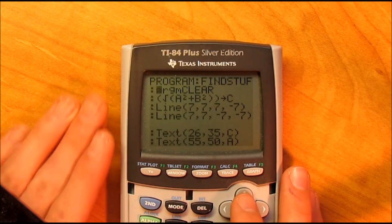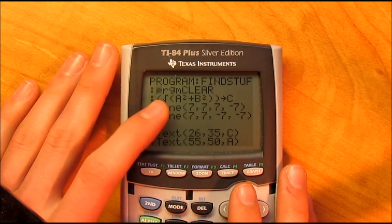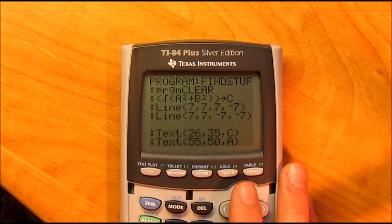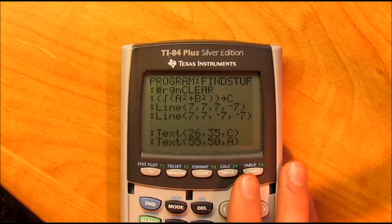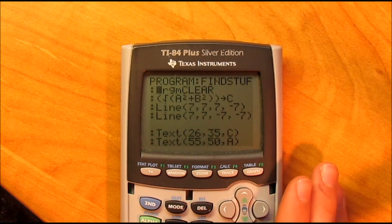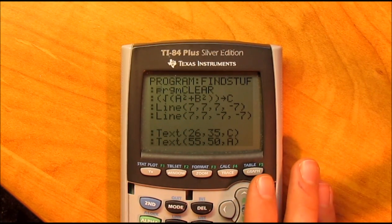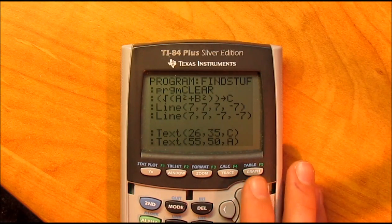Once you've done that, if you don't already have my clear and unclear programs in your calculator, you're going to need to go to a video because we need that one for this program. Annotate it in the description. Go to that video, get the clear and unclear programs, it'll take two seconds and then come back.